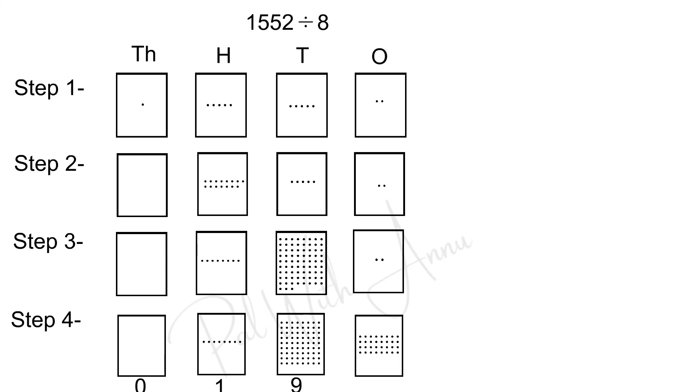And finally, in the 1's box, there are 32 dots. That means, 8 into 4 equals to 32. So, write 4 here. That means, 1552 divided by 8 equals to 194.